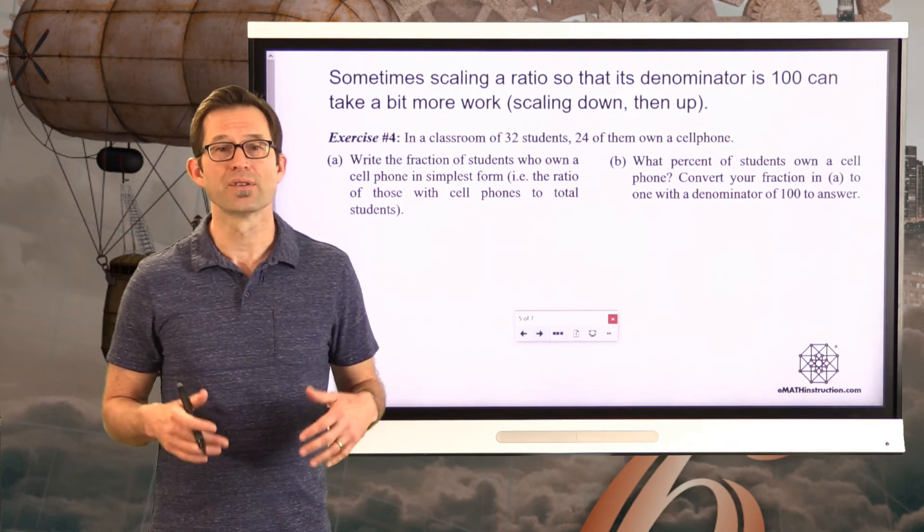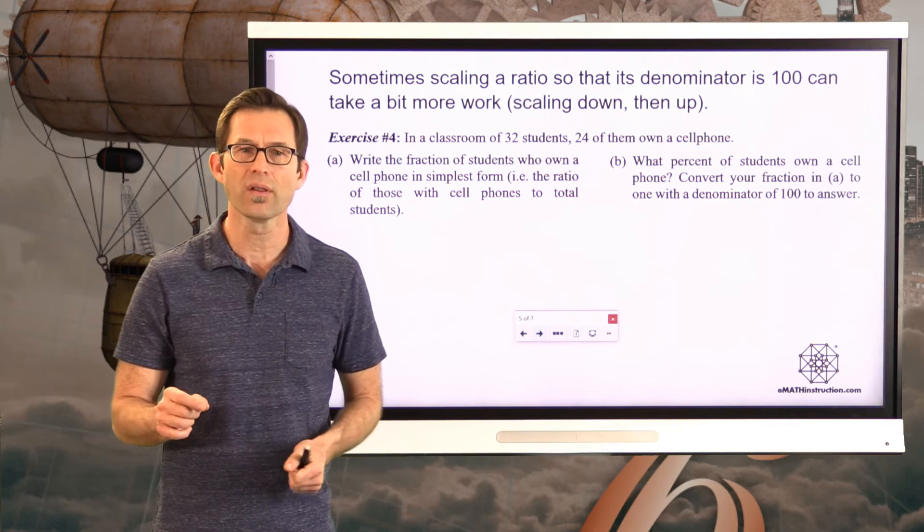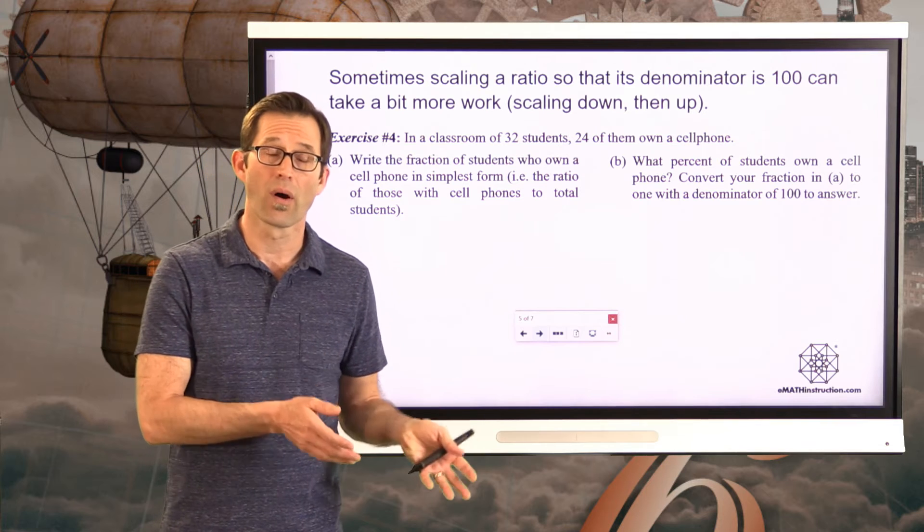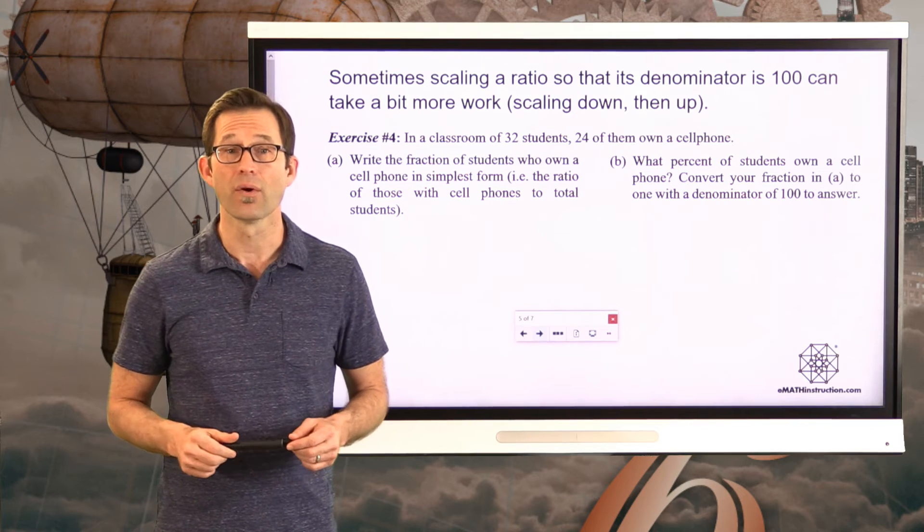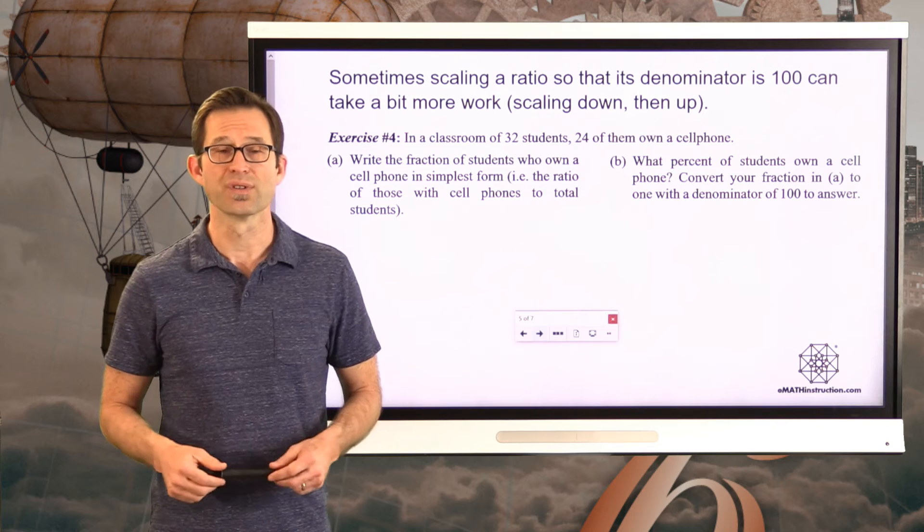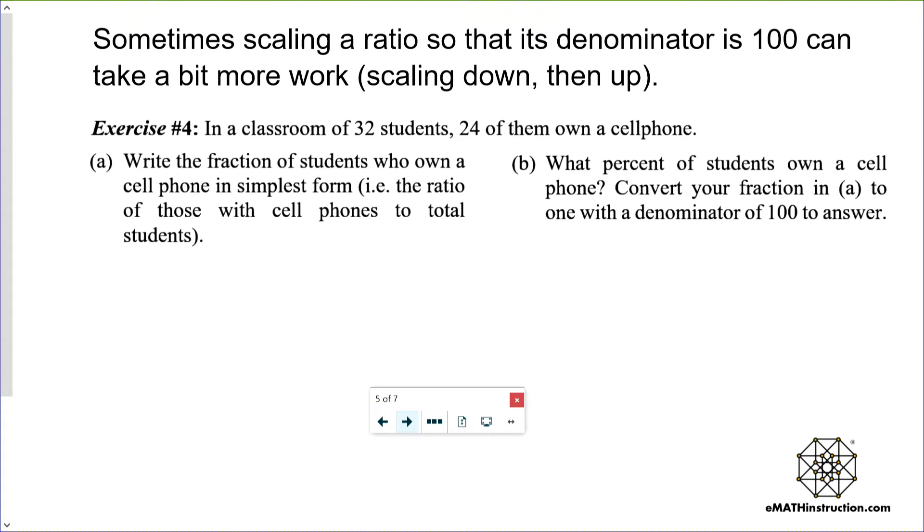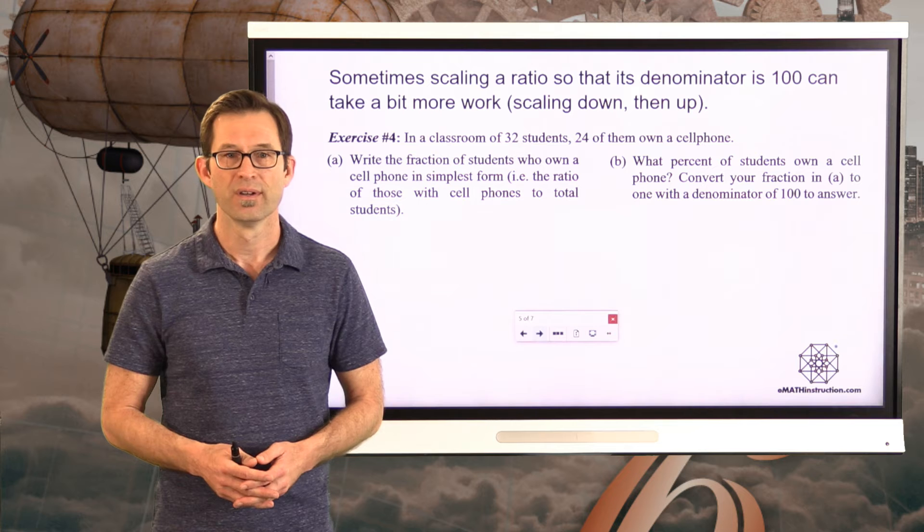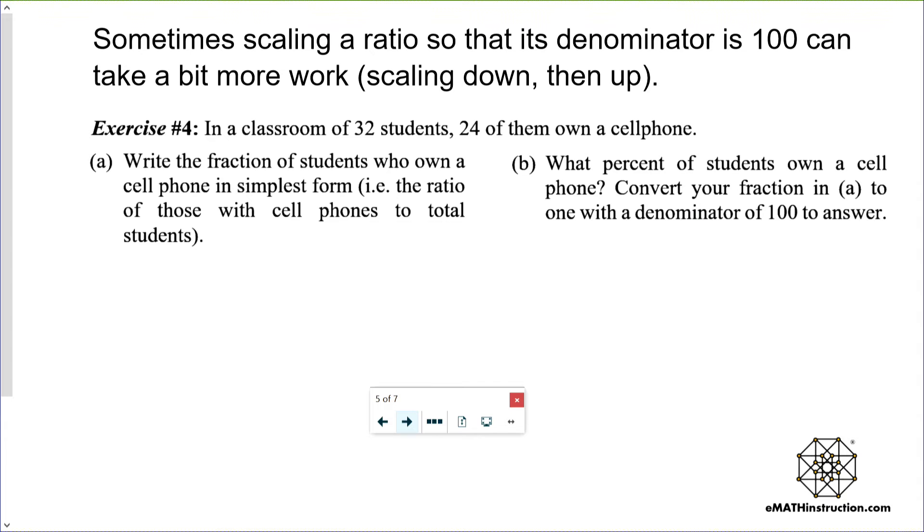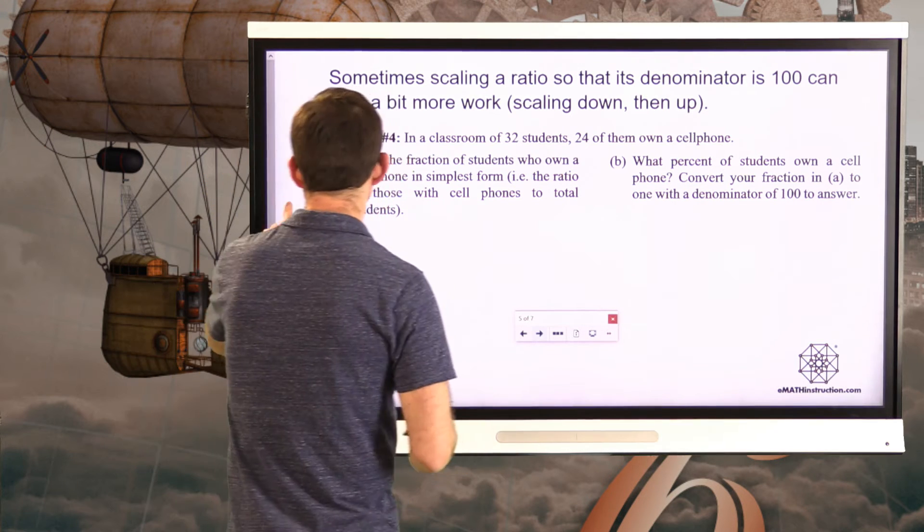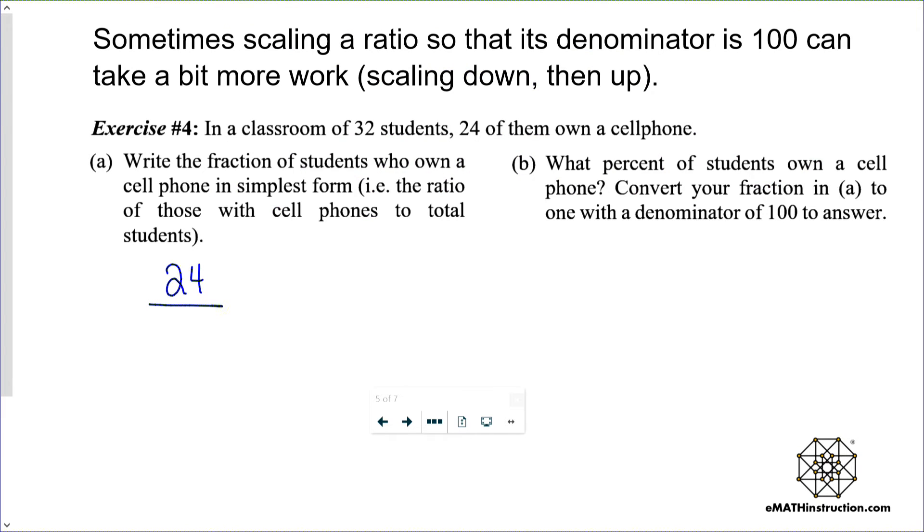We want to keep working with this. Keep getting those ratios that have denominators of 100 to answer percent problems. Sometimes scaling a ratio so that its denominator is 100 can take a little bit more work. Specifically, we might have to, let's say, scale down our ratio to get it in its simplest form, and then maybe scale it up so that it has a denominator out of 100. Now let's take a look at a really nice example of that in exercise number four. In a classroom of 32 students, 24 of them own a cell phone. Letter A, write the fraction of students who own a cell phone in simplest form, i.e. the ratio of those with cell phones to the total number of students. Why don't you go ahead and do that? That's pretty easy. Pause the video for a moment.